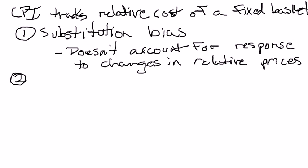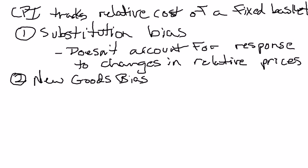The second source of bias is what we call new goods bias. The government goes out, does these surveys, finds out what the typical household is purchasing, and then tracks the cost of that fixed basket over time. The problem is, when the government does a survey, say in 2005, to see what the typical household is buying, that doesn't contain things like iPhones, which didn't exist until 2007. But in 2007, a lot of people are buying iPhones. Likewise, a couple years later, people are buying iPads, but those might not be in the fixed basket of goods the government is tracking.